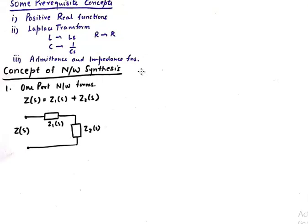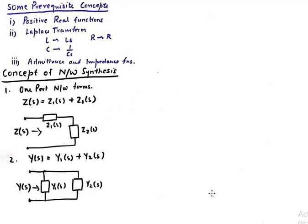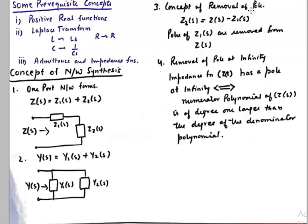Let's begin with the core concepts of network synthesis. The first concept is that if you've been given some function — say an impedance function, which could be a driving point impedance for a one-port network — it can be segregated into two impedances Z1(s) and Z2(s) arranged in series. Similarly, a total driving point admittance can be divided into two parts arranged in parallel. So two impedances in series give the driving point impedance, and two admittances in parallel give the driving point admittance.